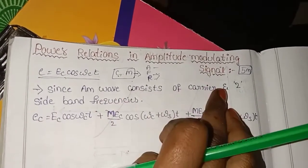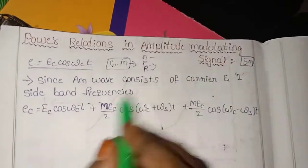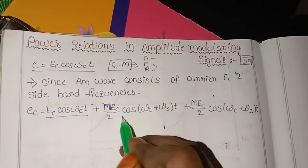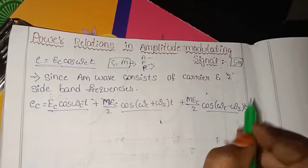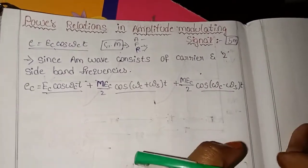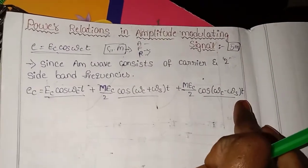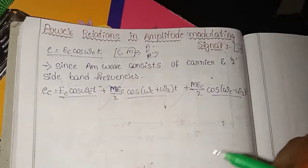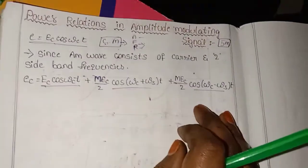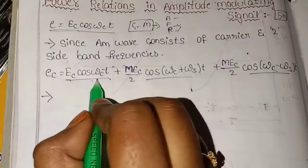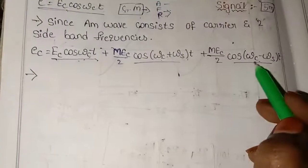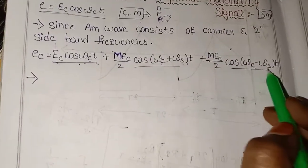There are two signals. The carrier frequency is the base. Here, we have carrier plus source and carrier minus source — these are the two sideband frequencies.